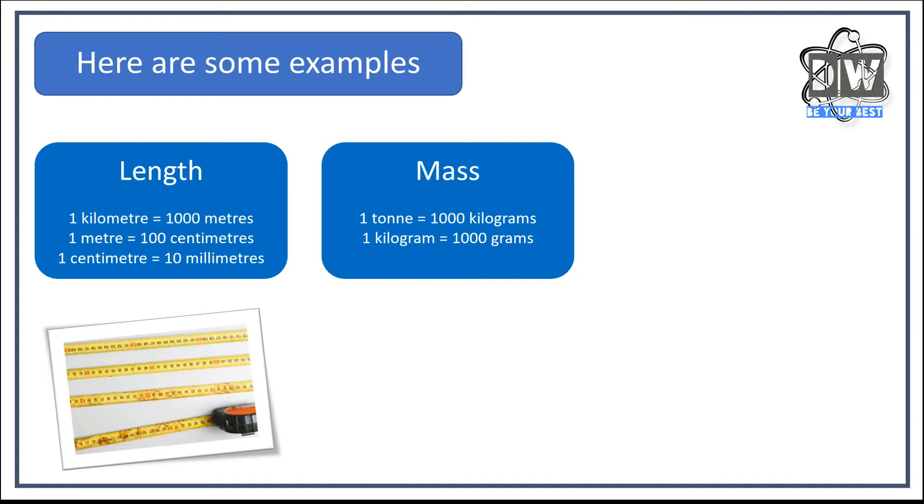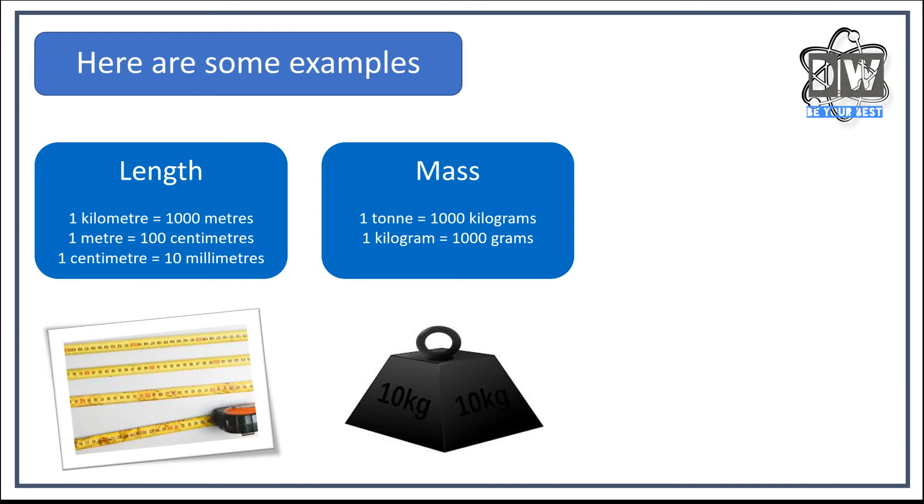Mass now. So we've got one ton. To find out what they are in kilograms we'd times it by a thousand. Kilograms into tons we would divide by a thousand. One kilogram into grams times by a thousand and so forth and so on. And you can see what we're doing now. This is mass, often referred to as weight.